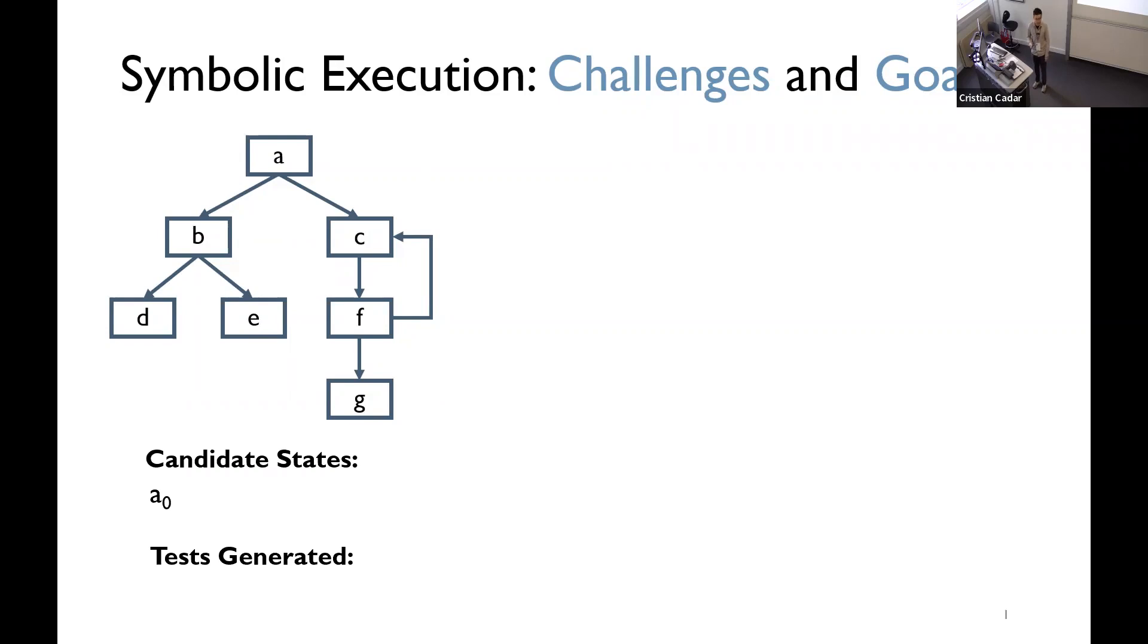Initially, the state A0 represents the block A, and the symbolic execution chooses this state, and it pushes the two descendants, the two children of A, B0 and C0, to the candidate states. Then, it explores B0, which represents the block B, and similarly, it appends the two children of B into the list of candidate states. Then, we can continue this, and then we reach a block E, which is an exit of the program, then we generate one test case.